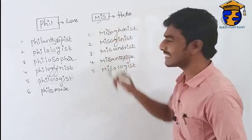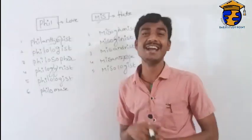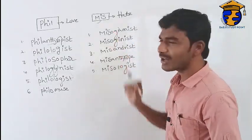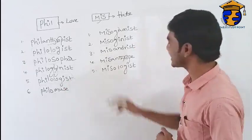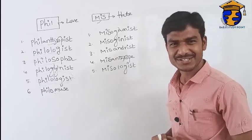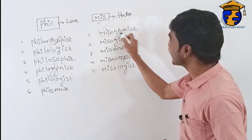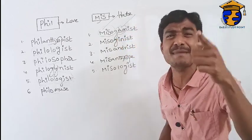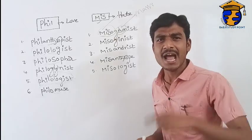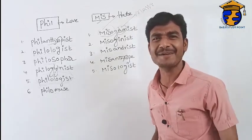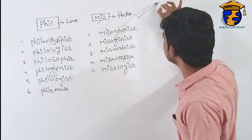Now let us discuss one more prefix: 'mis.' You know the meaning — 'mis' means hate. I have written five words on the board. The first word is 'misogamist.' The prefix 'mis' means hate, and 'gamos' means marriage. A person who hates marriage is called a misogamist.